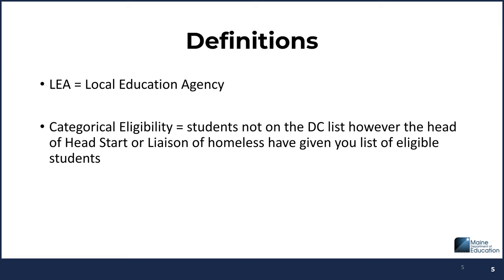The LEA — local education authority — is the district, the superintendent, the people running the program. In this case for CEP, categorical eligibility means students not on the DC list; however, if the Head Start or Homeless liaison has given you a list, those count. A student with an application and a SNAP number but not on the direct cert list is not counted in the ISP determination.